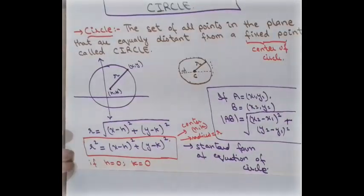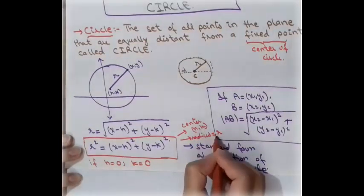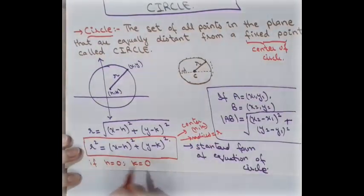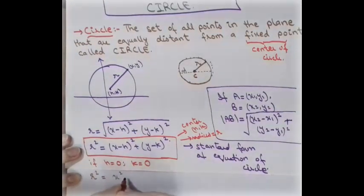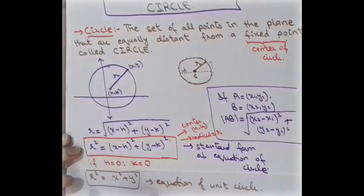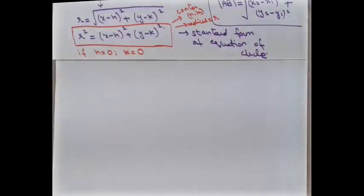In the special case where the center is at the origin — meaning h = 0 and k = 0 — we can write the equation as x² + y² = r². This is the equation of a circle centered at the origin with radius r.